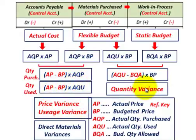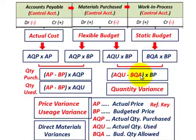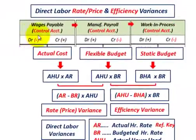For the quantity variance, we compare flexible budget to static budget: actual quantity used times budgeted price versus budgeted quantity allowed times budgeted price. So the quantity variance is the difference between actual quantity used and budgeted quantity allowed, times the budgeted price. That takes care of our direct materials variances.